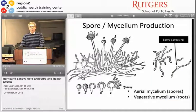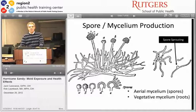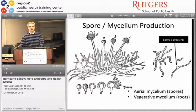Mold spores are ubiquitous. They will land on surfaces and, given environmental conditions of temperature, food source, and moisture, they will germinate. The vegetative mycelium will penetrate the substrate, looking for food and releasing enzymes—some of these are the microbial VOCs you'll hear about later. Then the aerial mycelium generates more spores through the hyphae and conidiophores. Essentially, the whole intent of mold is germination of very fine particles, spores—something industrial hygiene practice aims to prevent.